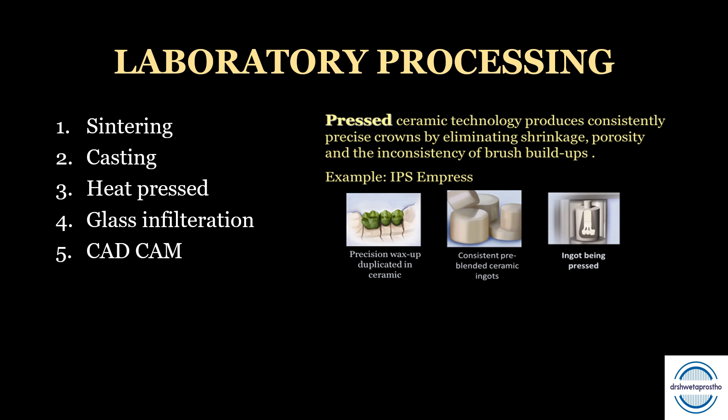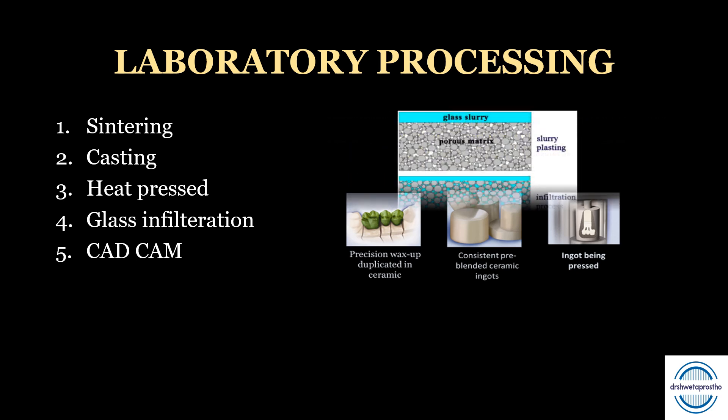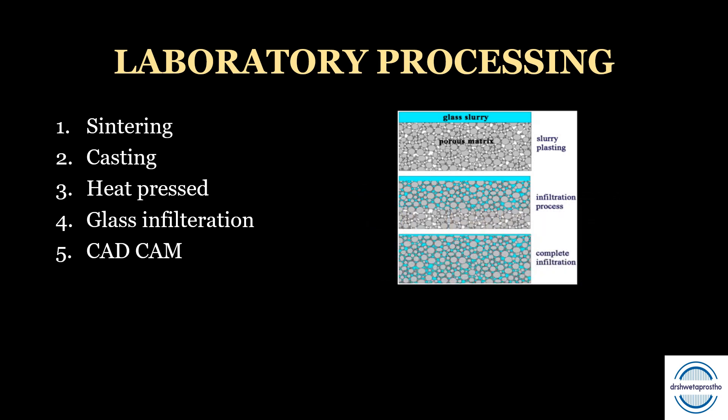Glass infiltration is mainly done for the oxide type of ceramics. A porous crystalline slip is formed by fusion of metallic particles at high temperature. Then a glass coat is fused over this porous slip to infiltrate into the pores and strengthen the structure — that is why it is called infiltrated glass ceramics. Over this, veneering porcelain is applied. Examples include In-Ceram Alumina, In-Ceram Spinel, and In-Ceram Zirconia.